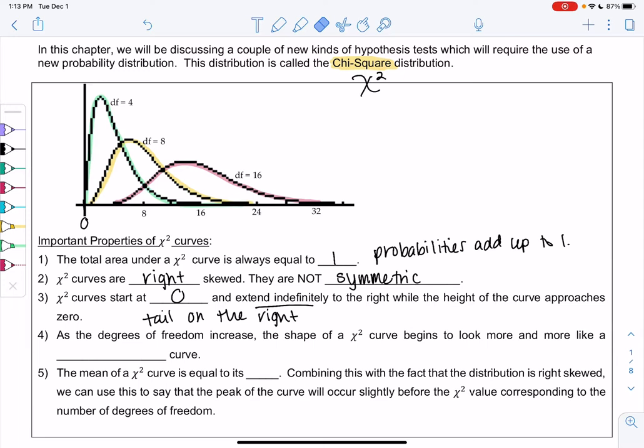As the degrees of freedom increase, the shape of the chi-square curve starts to look more and more like a normal curve, and you can maybe see that a little bit in the graph above.